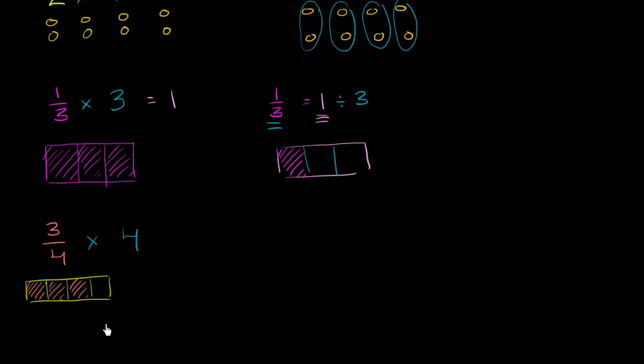But now we're going to multiply it by 4. So we're going to have 3 fourths four times. So we're going to need some more wholes here. So let's throw in another whole. So this is 1 three fourth. Now let me do the next 3 fourth in another color. So this is another. That's a fourth. That's a second fourth. That's a third fourth. That's another 3 fourths.